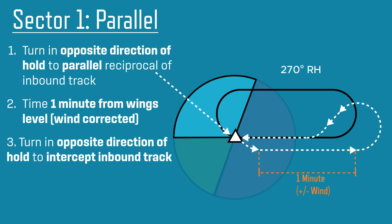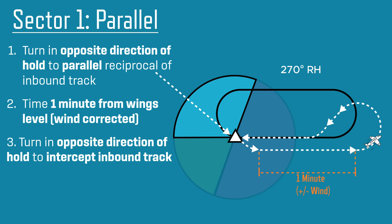Sector 1 is the parallel entry. On reaching the fix, turn in the opposite direction to the hold to free-air track the reciprocal of the inbound course, paralleling the inbound course. Start a timer when wings level on this heading and continue for one wind-corrected minute. At the end of the wind-corrected minute, make a further turn in the opposite direction to the hold to intercept the inbound track. This entry can be challenging, as often a 45 to 60 degree intercept is required, and it takes practice and good judgment to know when to roll out.